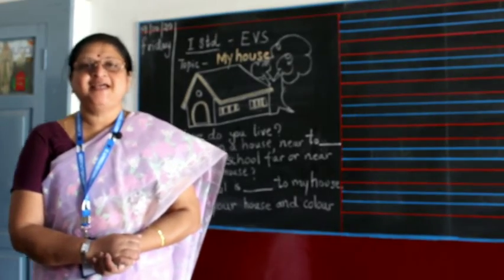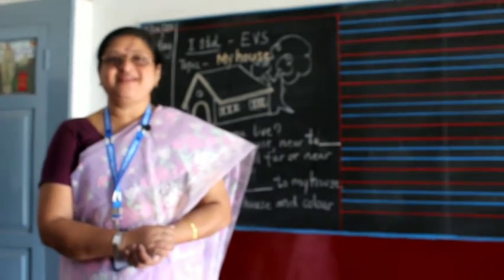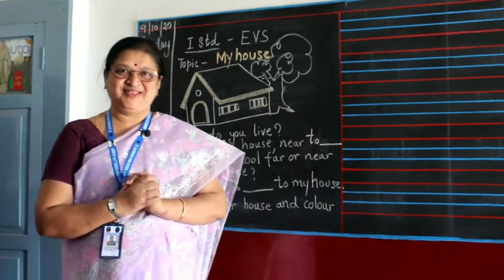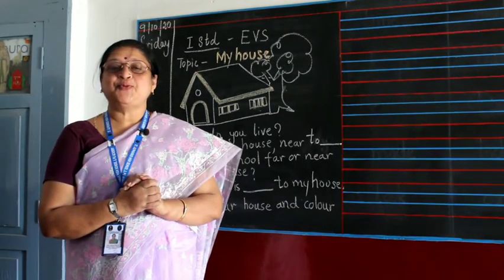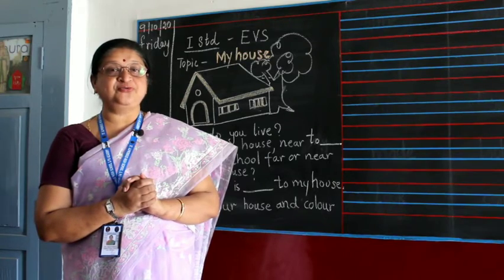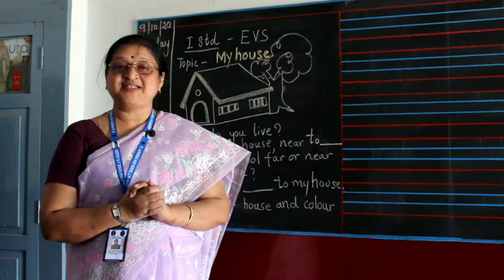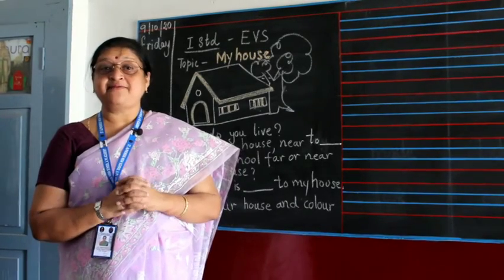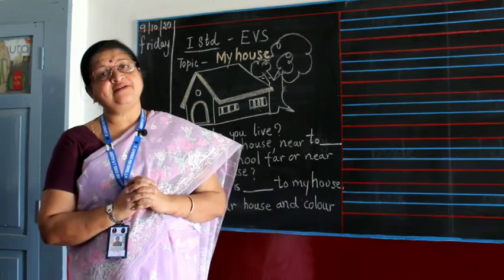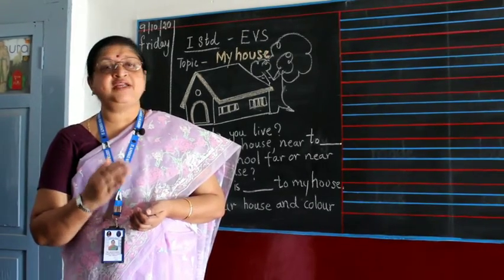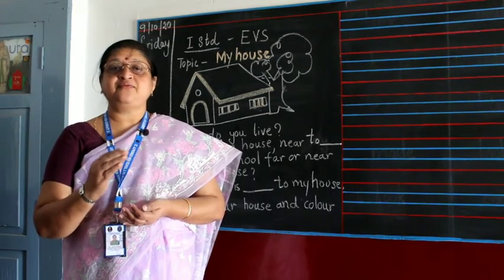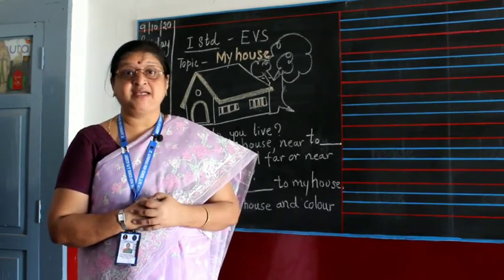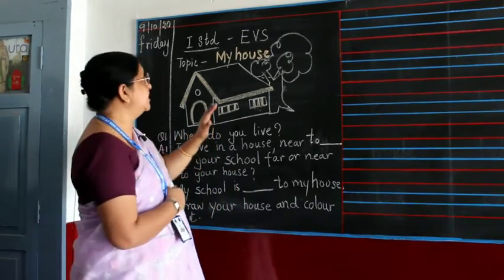Good morning children. For your EBS today, you have for standard children a nice topic called 'My House.' You know, after you finish your school, where do you go? You go to your house. Each one of you have your own house. Some of you live very close to the school, some very far, and some come by auto or bike.